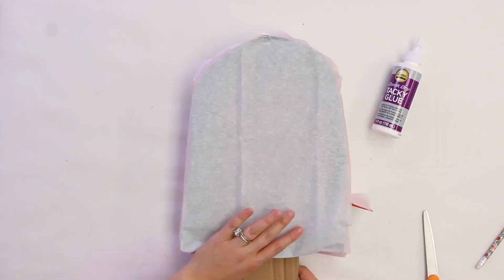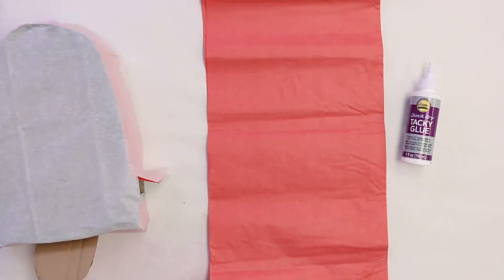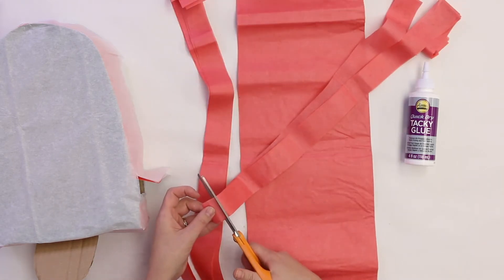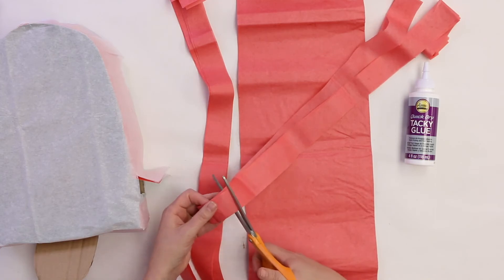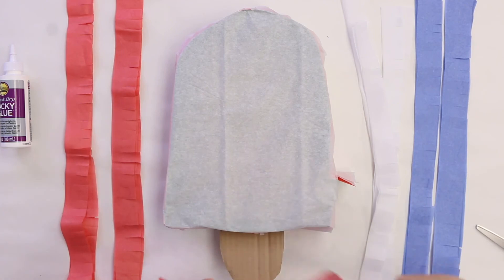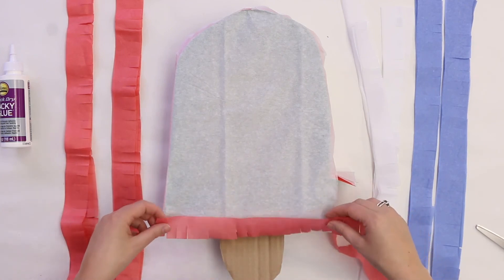We're going to go ahead and put our popsicle stick in right now. You want your fringe to be about two inches thick. And we're going to cut slits, but we're not going to go all the way through our fringe. The next step is going to be to glue each individual sheet of fringe around our popsicle. So we want to start with one at a time.